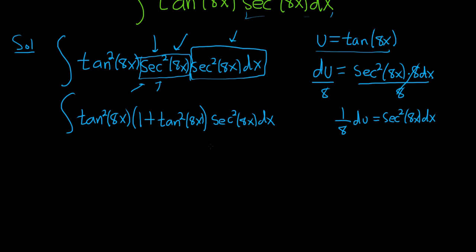Now we're ready to go. This piece here is going to be our 1/8 du. So this will become 1/8. And then all the tangents are u's. So u squared, parentheses, 1 plus u squared. And then here we have our du.